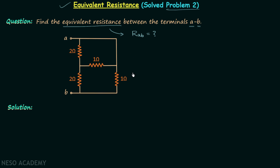Before moving to the solution, pause the video and observe the given network for a while. I hope you are now done observing this network. I think you encountered some difficulty in finding the series and parallel combination of resistors. Whenever you are in this kind of situation, always look for the equipotential points.